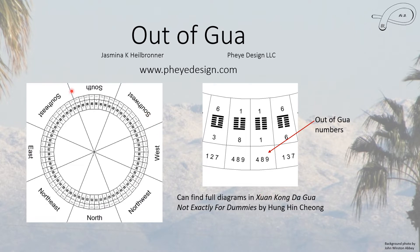Now, this is the actual chart. I can't reproduce it at a level where you can actually read it, but I have a close-up here. You can find the full diagram in this book, Shun Kuang Da Gua — Not Exactly for Dummies by Hong Hong Xiong. The 'Not Exactly for Dummies' is actually quite accurate. There's a lot of detail in there, but it's the chart you need to worry about. So this is what a close-up of that ring looks like. You have the hexagram, and there are some associated numbers with it, which will come into play later. But these three numbers are the Out-of-Gua numbers.